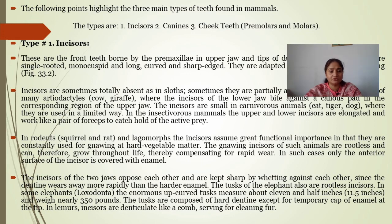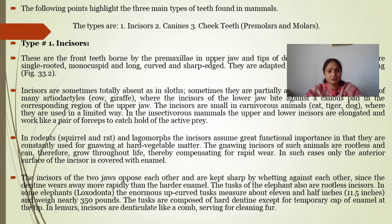Loxodonts, or elephants, have open-rooted teeth on the outside. The tusks are composed of hard dentine except for a temporary cap of enamel. Lemur incisors are comb-like in structure and they help in hair cleaning.